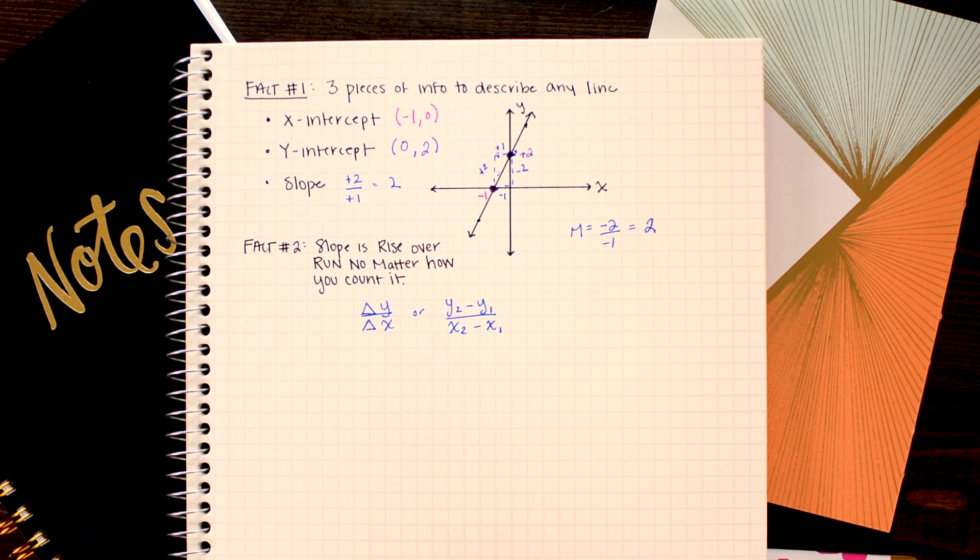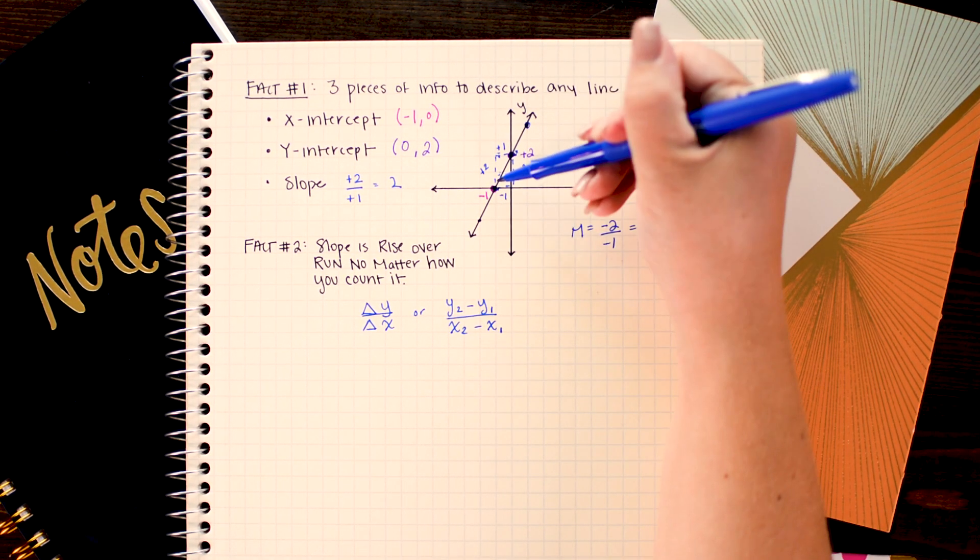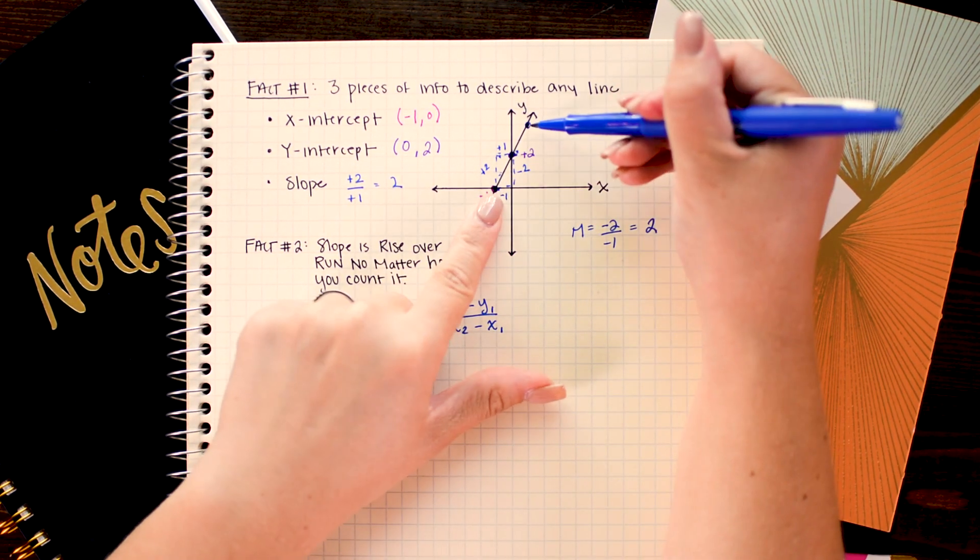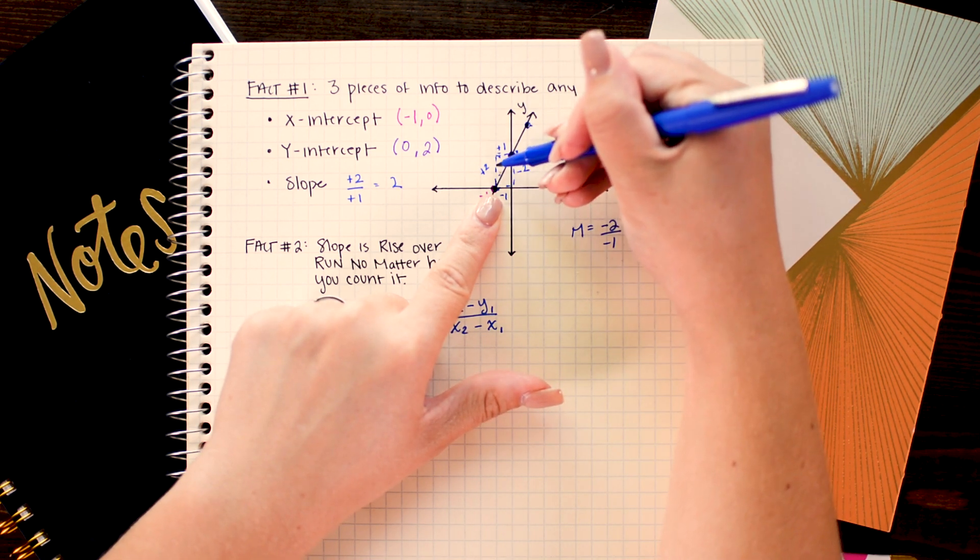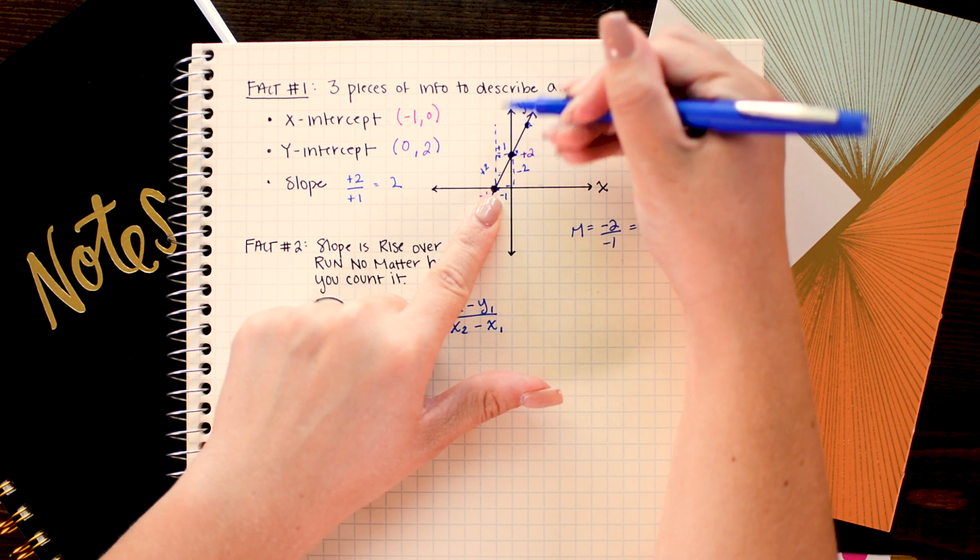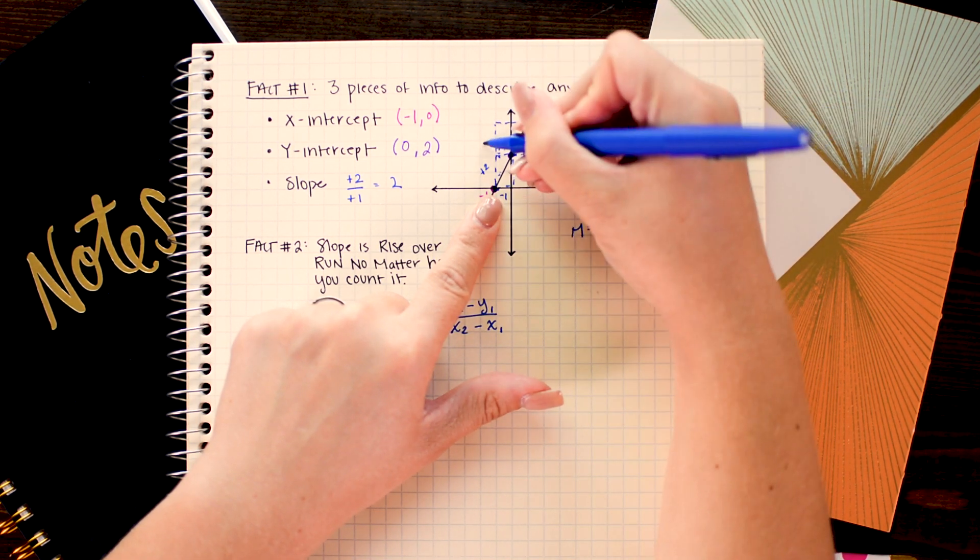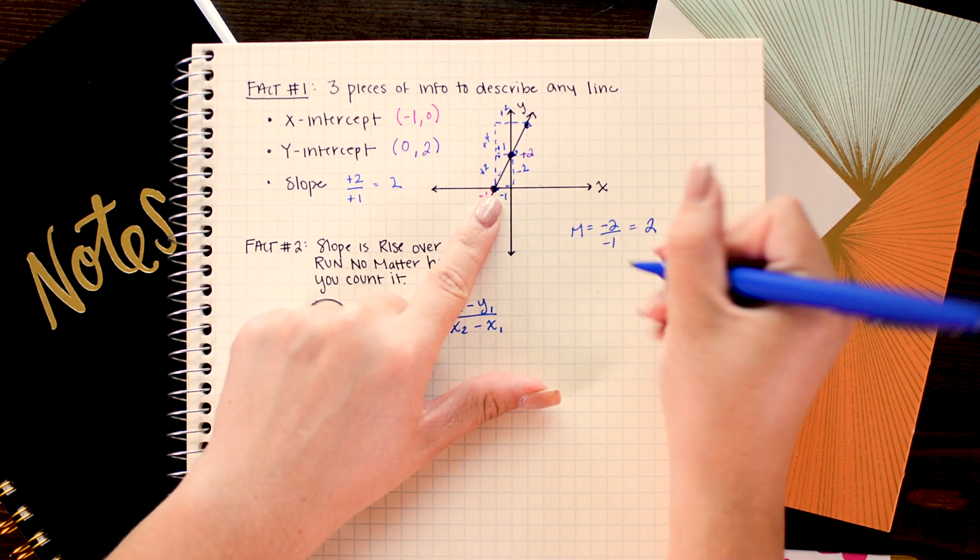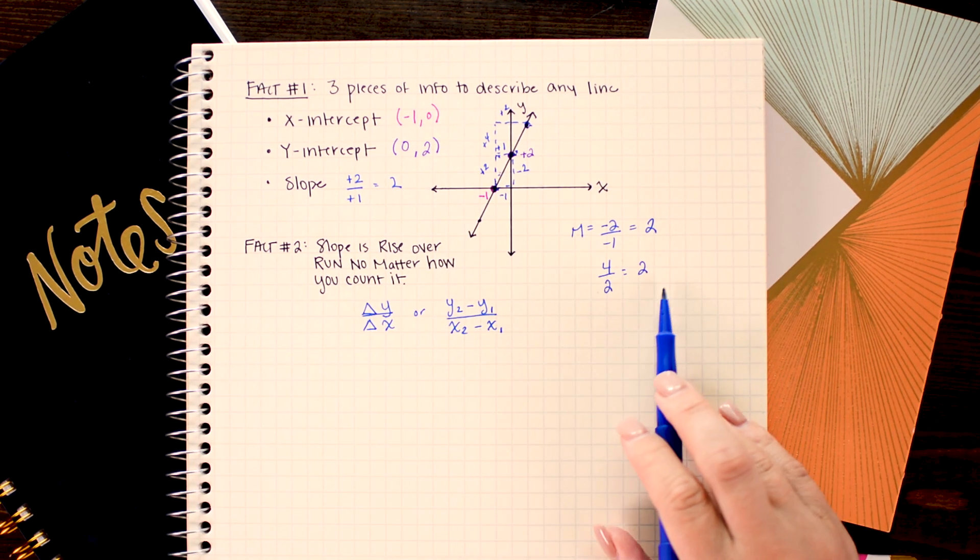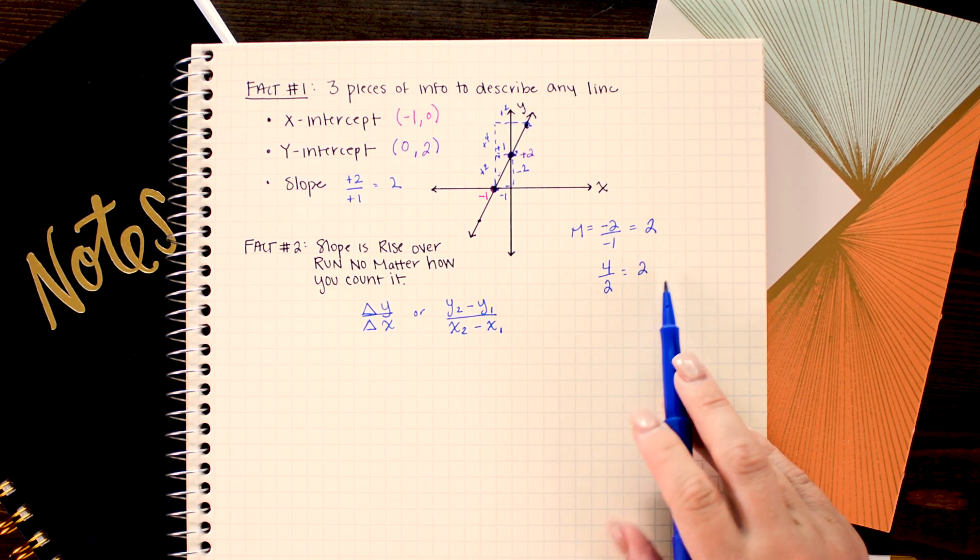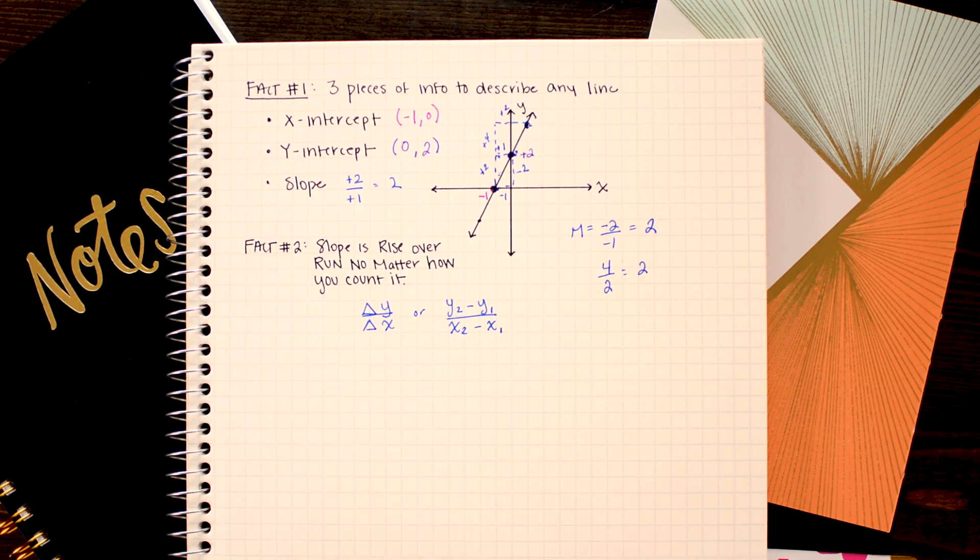We could also have used another point on this line. So perhaps this point and we could have made a triangle between say this point and this point. In that scenario we would have gone up 1, 2, 3, 4 and to the right 2. That gives us a slope of 4 over 2 which again reduces to 2. So no matter how you're counting it off on the graph, the slope is always going to reduce to the same number.